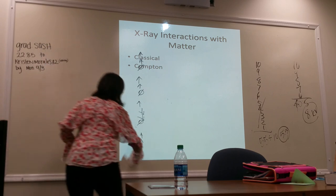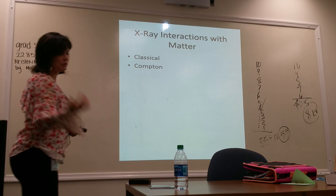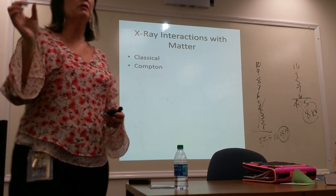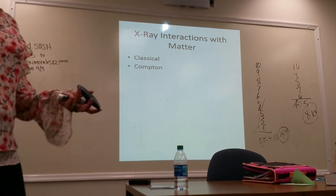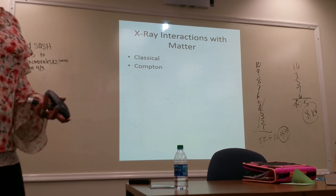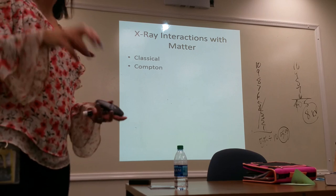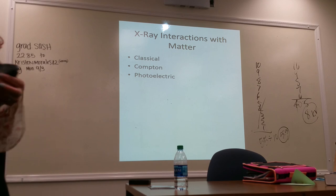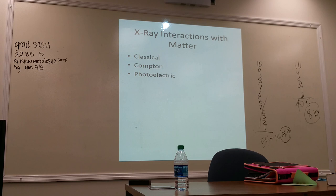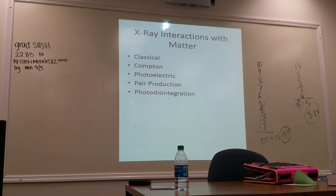Now moving into x-ray interactions with atoms of the body. Unlike tungsten, the body has low atomic number atoms — oxygen is 8, carbon is around 6. There are three interactions we deal with in radiology: classical, Compton, and photoelectric. Two others — pair production and photodisintegration — are relevant to radiation therapy. The first three are what we deal with in diagnostic radiology.